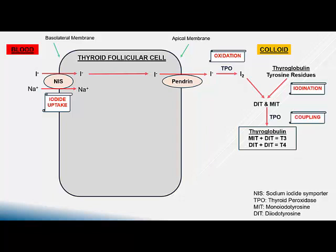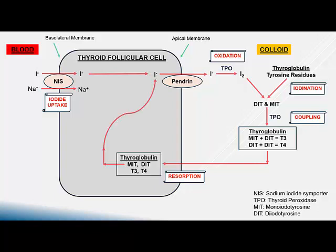T3 and T4 have now been formed and need to be released into the bloodstream. They must be extracted from the thyroglobulin. This is achieved by resorption, where the colloid is taken up from the apical surface into the follicular epithelial cell. Proteolysis then takes place in the lysosomes, releasing MIT, DIT, T3, and T4. MIT and DIT are metabolized, and the liberated iodide is recycled back to iodinate tyrosine residues in thyroglobulin again.